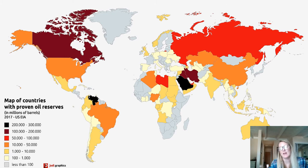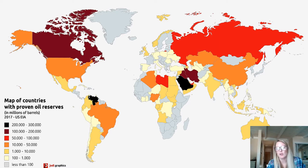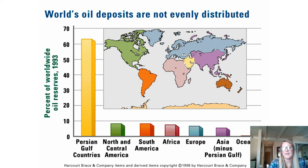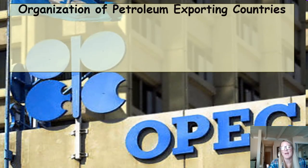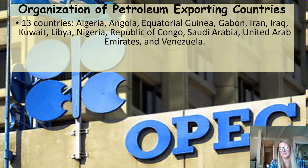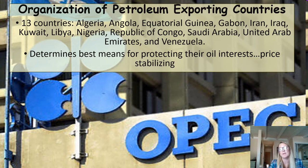So who has the most oil? Countries shown in black on this map have very high numbers of oil reserves, with maroon, red, and orange following. Countries in gray are lacking in oil reserves and depend upon imports. The Persian Gulf countries definitely contain the highest amounts of oil deposits. That brings us to OPEC — the Organization of Petroleum Exporting Countries. Countries with a lot of oil came together to form OPEC, whose goal is to determine the price at which oil should be sold to protect everyone's interest in the group.